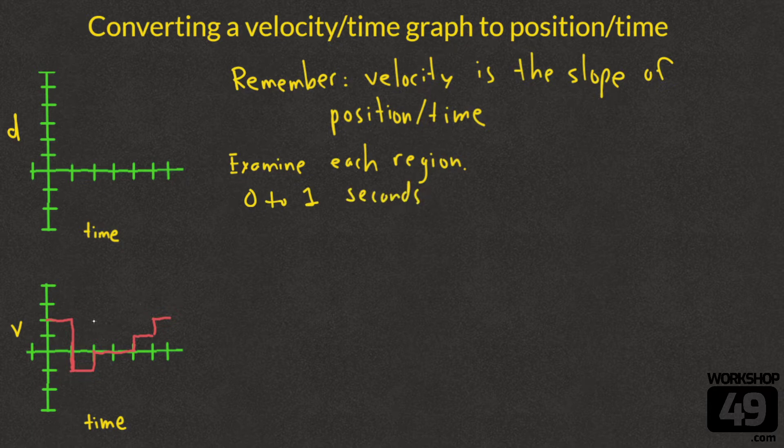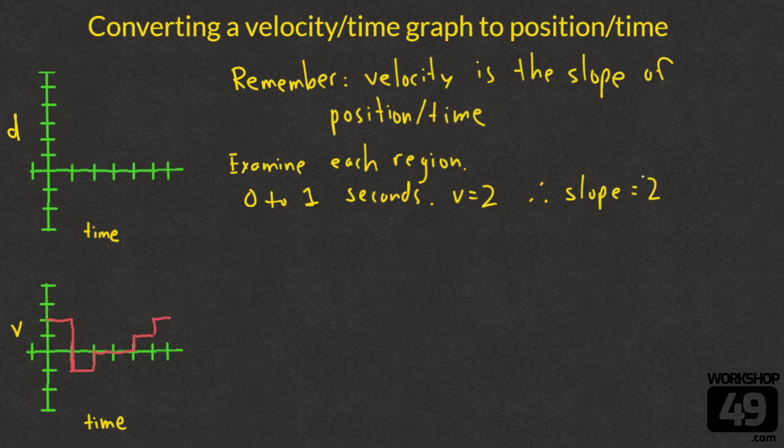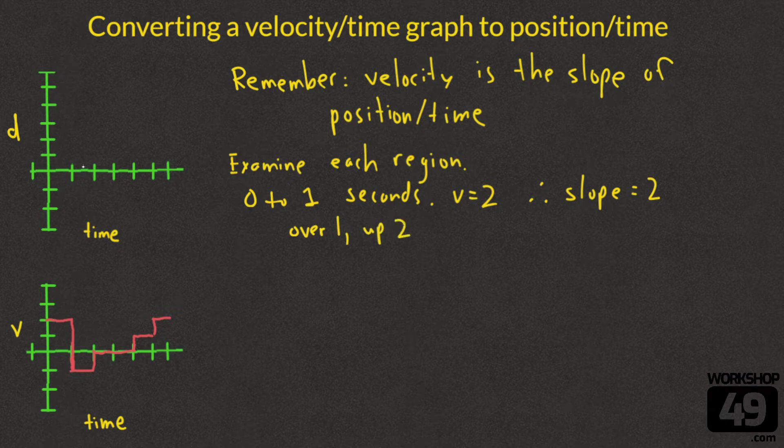First we'll look at 0 to 1 seconds. At 0 to 1 seconds the velocity is at a height of 2. Because our velocity is 2, it means that our slope must equal 2 of the position time graph, which means we're going to go over 1 up 2. That's how slope works. We make a little dot, connect the dots, and that is our first region complete.